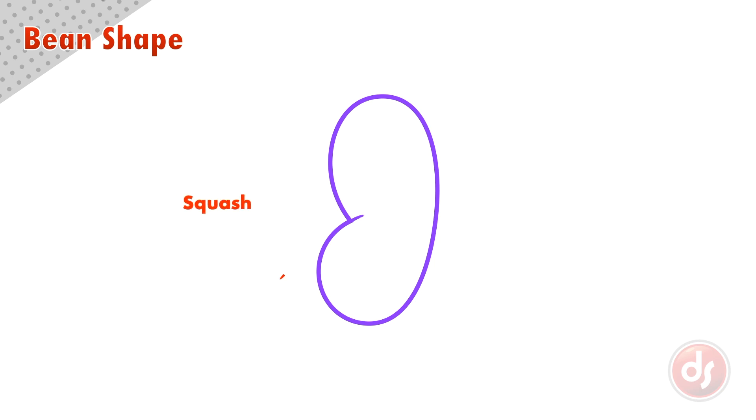With every bean there is a squash side and a stretch side. This describes the natural bend that usually happens in the figure. By drawing a center line you can see the position of the figure and one bean could represent many poses by changing the position of the center line.